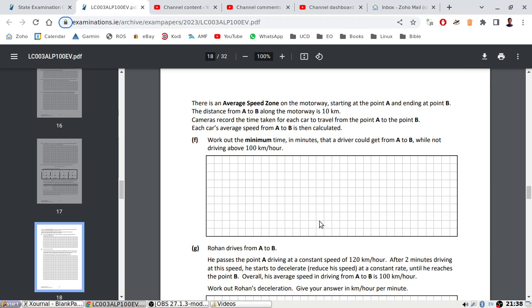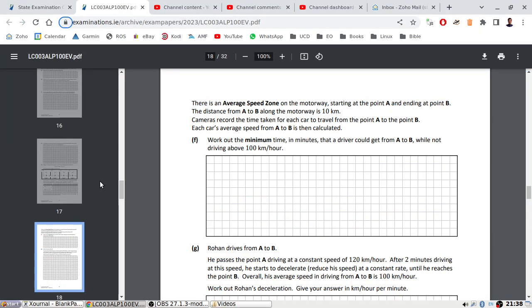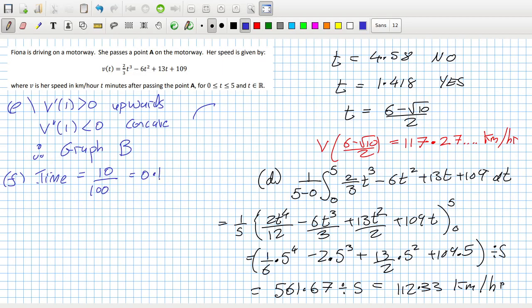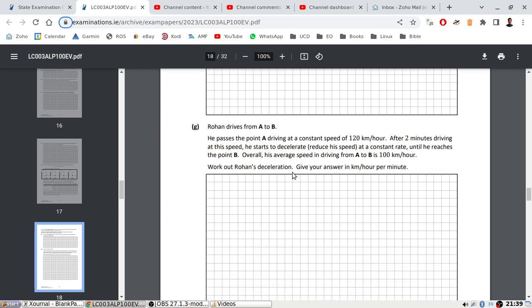Part F: There's an average speed zone on the motorway starting at point A and ending at point B. The distance from A to B is 10 kilometers. Work out the minimum time in minutes that a driver could spend getting from A to B while not driving above 100 kilometers per hour. So what's the quickest they could do it without breaking the speed limit? I think this is a simple distance, speed, time. Time is distance, which is 10, over speed. So that's 0.1 of an hour, which is 6 minutes.